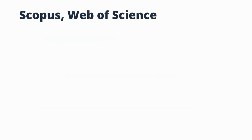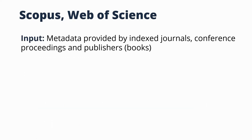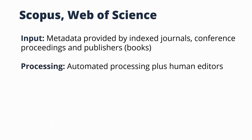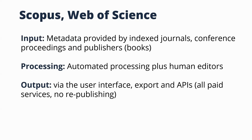Scopus and Web of Science are two products many universities license. Here, metadata is directly provided by publishers of the journals, conference proceedings, and books they index. They have automated processing with human editors who enhance the metadata. Output is via the user interface, and both allow exporting data and access via APIs. The problem is these are paid services and you're not allowed to republish the data — so we wouldn't be able to use it in Open Knowledge Maps even if we could pay for it. Their ranking uses simply the similarity between your query and the metadata.